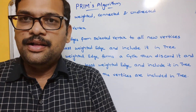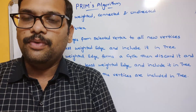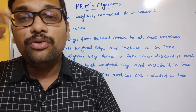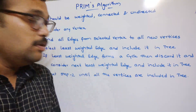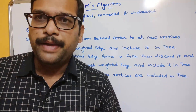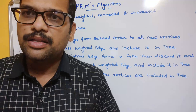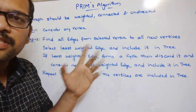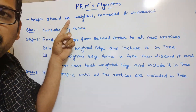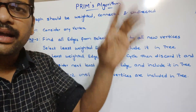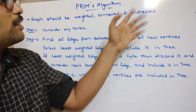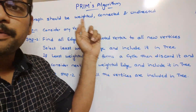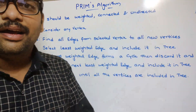Hello friends, welcome back to our channel. In the previous session we discussed about what is a spanning tree and what is a minimum cost spanning tree. In today's session we'll discuss how to find that minimum cost spanning tree. There are two approaches: Prim's algorithm and Kruskal's algorithm. Today we'll discuss Prim's algorithm. Before applying Prim's algorithm, make sure the graph is weighted, connected, and undirected.